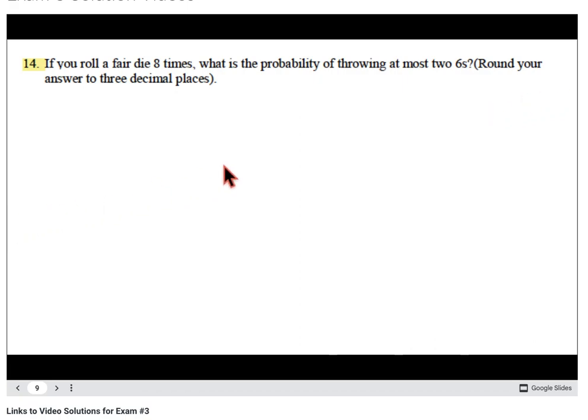This problem doesn't mention it's binomial or that we could use Bernoulli trials, but we're rolling a die eight times, which is an indication that's what's going on here. There's going to be at most two sixes, so that's what the success is - a success is to roll a six.